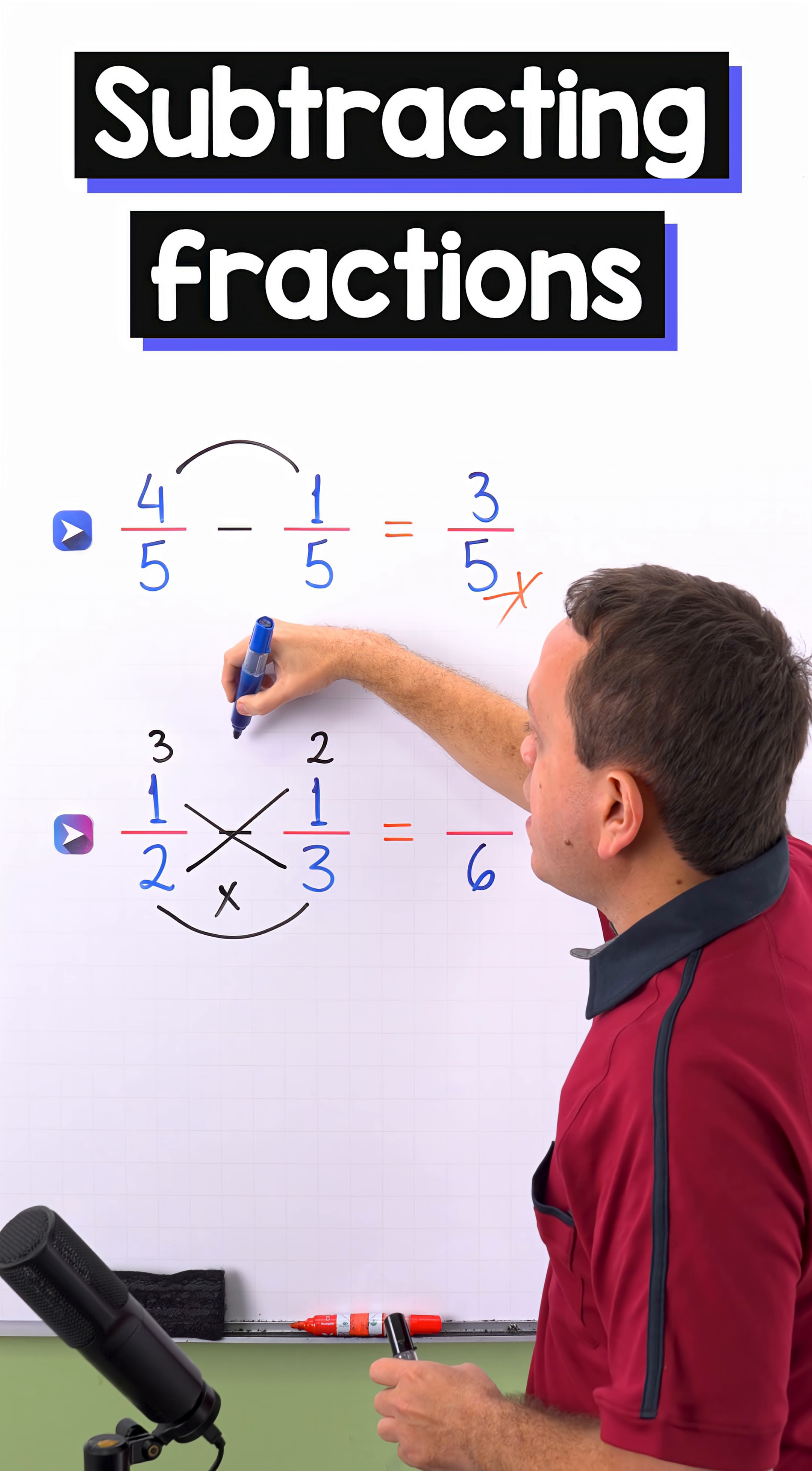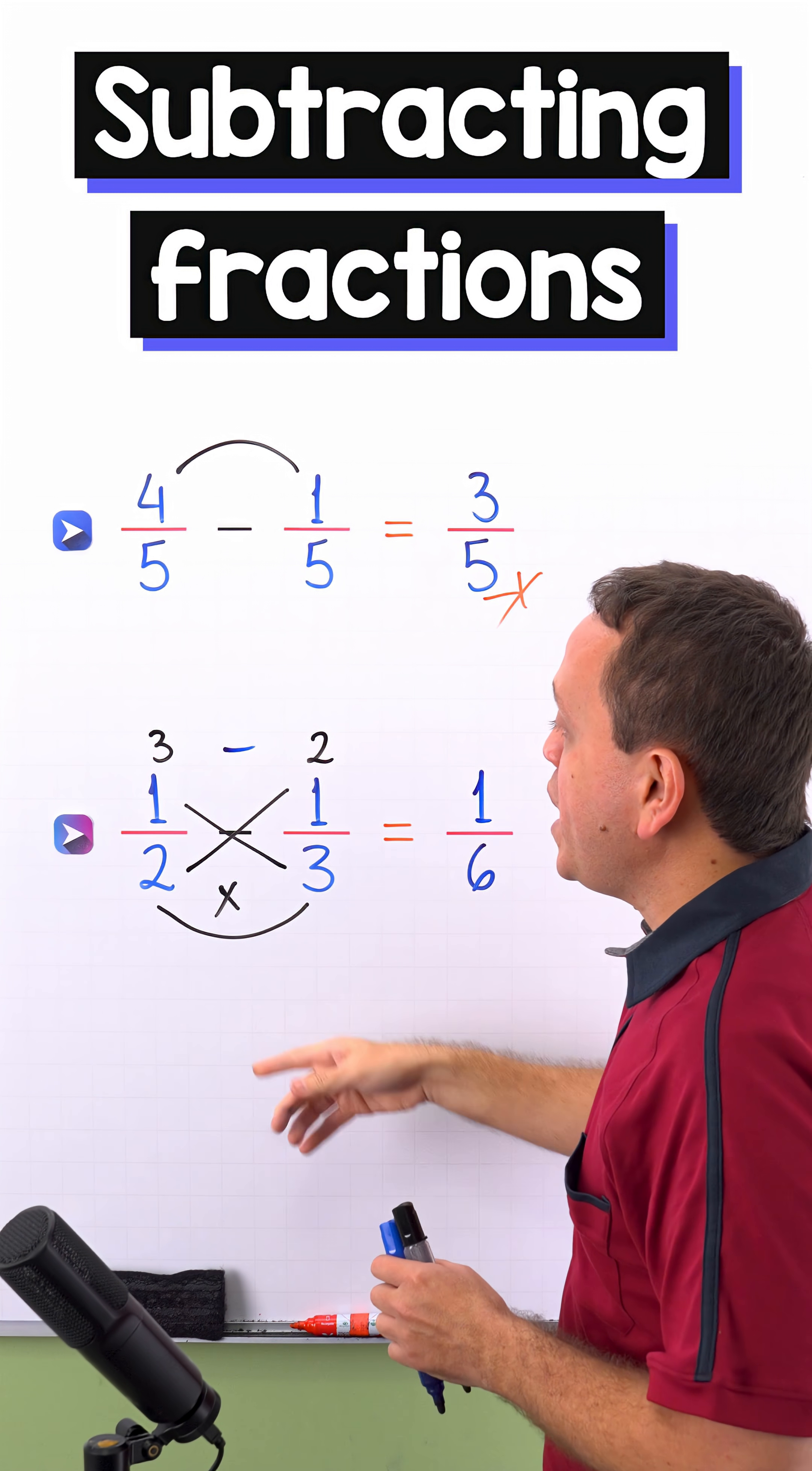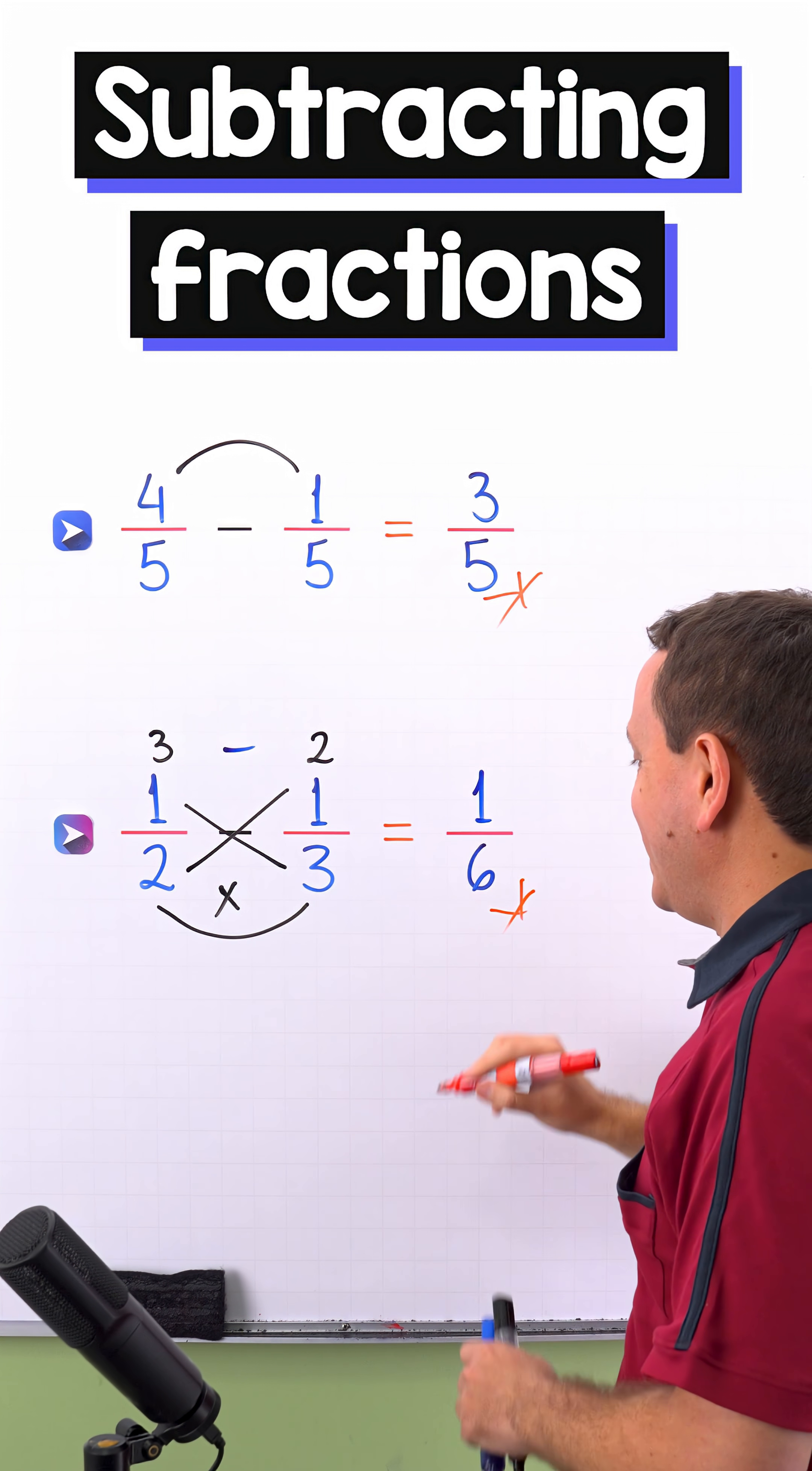Now we subtract 3 minus 2 gives us 1. In that way, 1 half minus 1 third gives us 1 sixth.